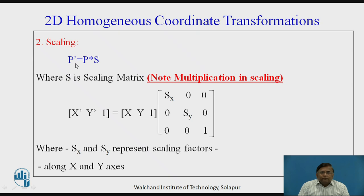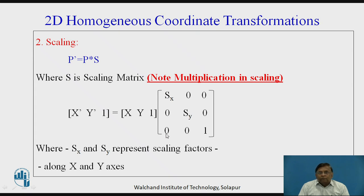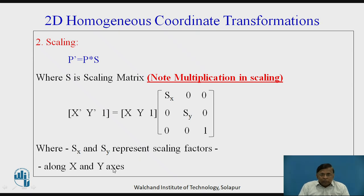Secondly, talking about scaling: P-dash new coordinates will be equal to P multiplied by the scaling matrix S. In this case, the scaling matrix S would be given by Sx and Sy placed diagonally, with 1 as the new augmented part of this matrix. So this together gives us, in homogeneous coordinate systems, the scaling operation wherein Sx and Sy represent the scaling factors along the x and y axes. We are talking 2D but due to augmentation, we have a third parameter added in the matrix.